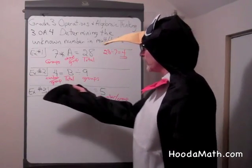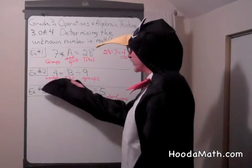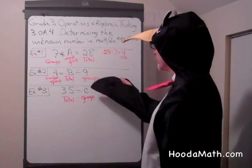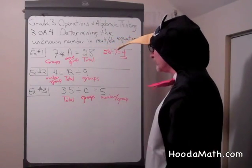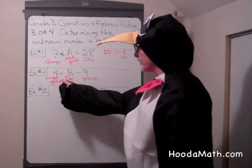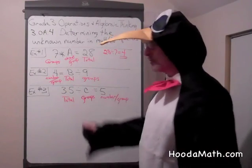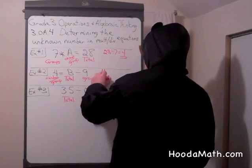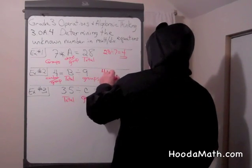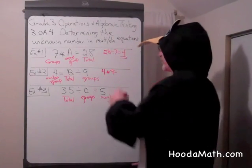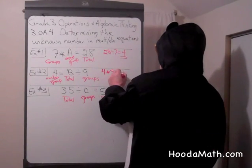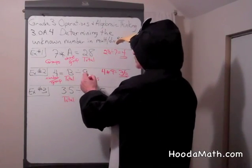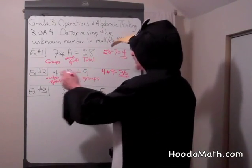In example 2, we know the number per group. We don't know the total, but we know how many groups. Well, 4 is in one group and we have 9 groups. We could multiply 4 times 9, which is 36. Or you could think 36 divided by 9 equals 4.